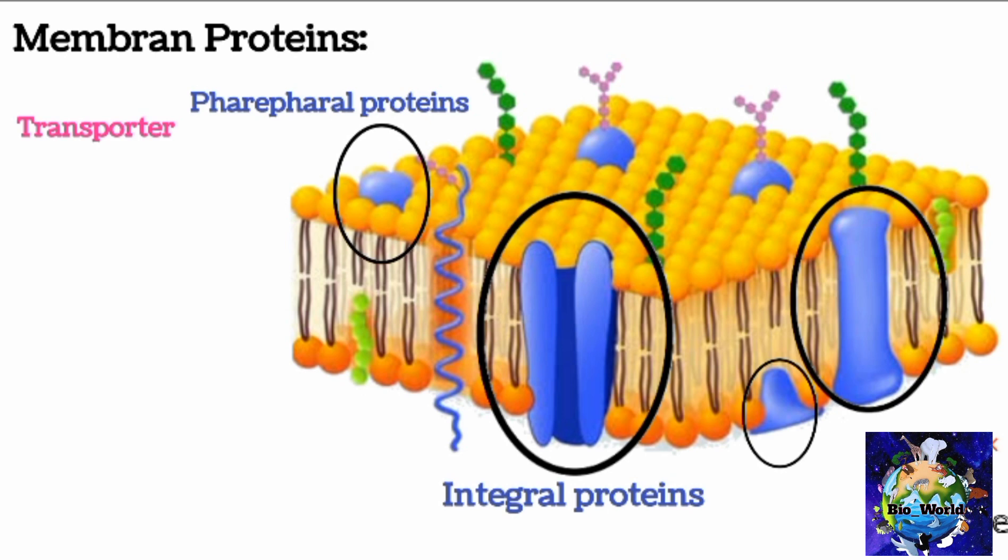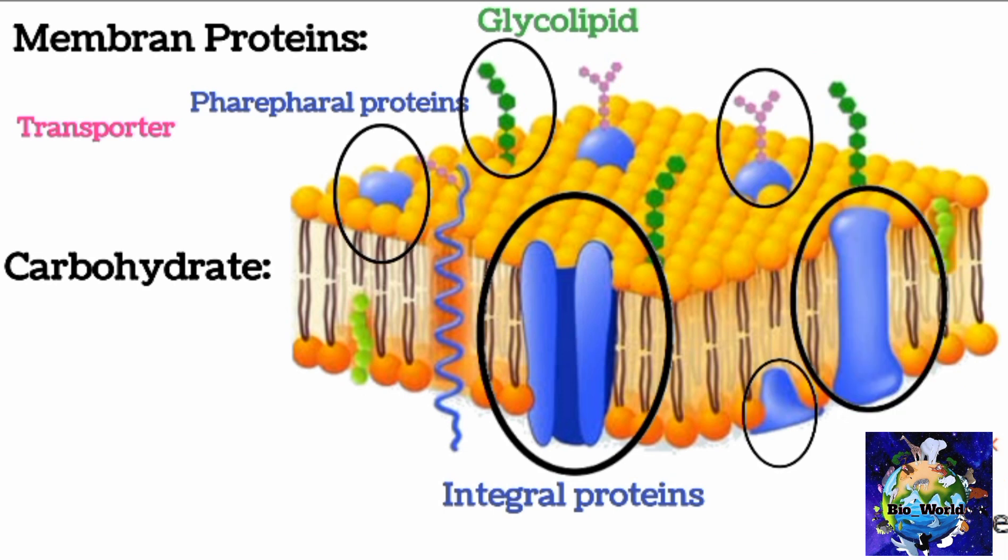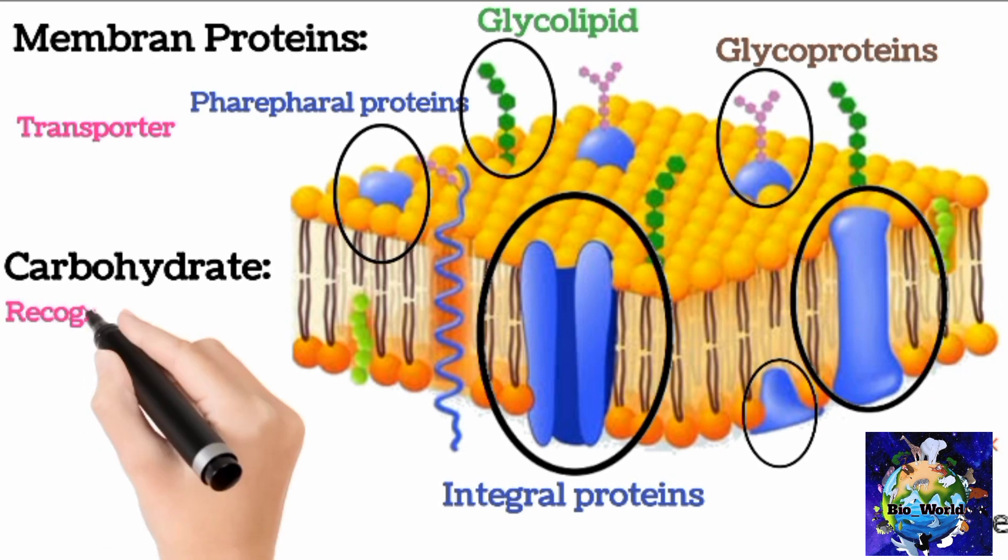Plasma membrane contains another chemical substance, carbohydrates. Carbohydrates are also chemicals like other lipids and proteins. Carbohydrates are found in two positions in plasma membrane. Those that are present on lipid of membrane are called glycolipids and carbohydrate found on proteins of plasma membrane are known as glycoproteins. Glycoproteins and glycolipids function as recognition receptor for the cell.